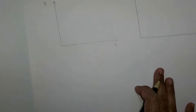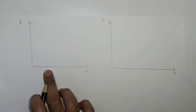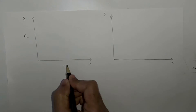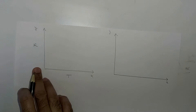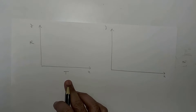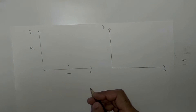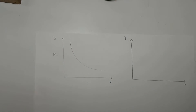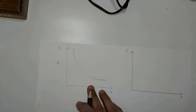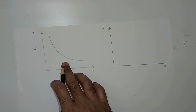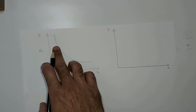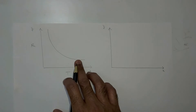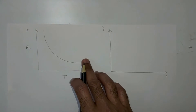Once the observation table is complete, plot two graphs. The first graph is resistance versus temperature — resistance in ohms on one axis and temperature in degrees Celsius or Kelvin on the other. When plotted, the nature of the graph shows that resistance decreases as temperature increases, meaning resistivity decreases and conductivity increases.